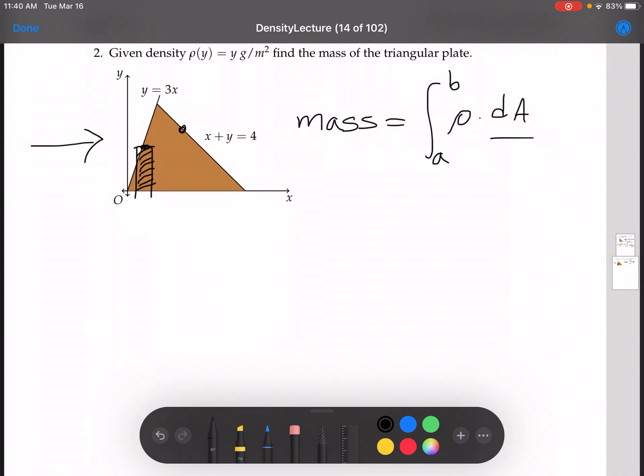This rectangle right here would have topmost function x plus y equals 4. So two different general rectangles means two integrals, and that's way too hard.